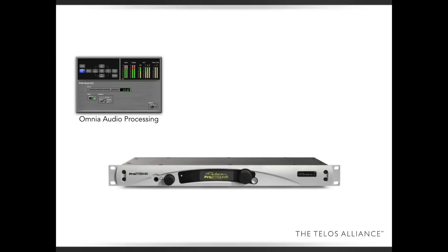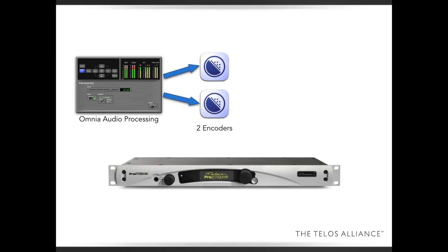Once the audio is done being processed with the Omnia audio processing, it then goes to two different encoders. The ProStream has these two encoders and they're completely independent except for their audio feed coming in. You can encode in MP3 or different flavors of AAC — like full AAC, HE-AAC, or even the very popular HE-AAC v2, which is popular for streaming because it's a low bit rate and yet it sounds really good. So you have two completely independent encoders.